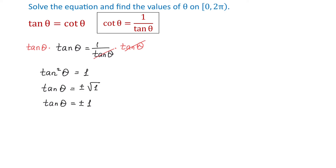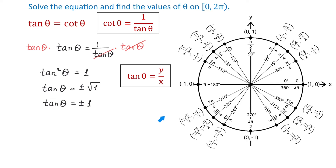To find theta we will use the unit circle. Tangent is defined as y over x, so on the unit circle we need to find all the angles where y divided by x is either positive 1 or negative 1.